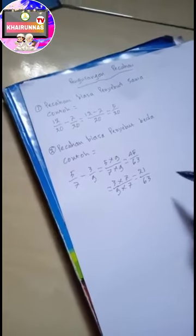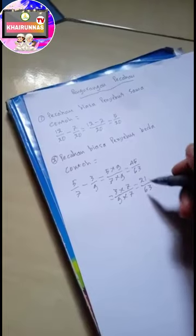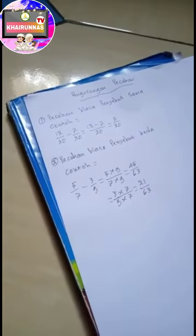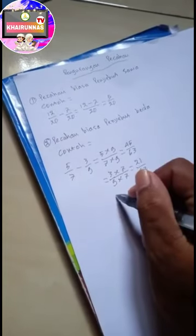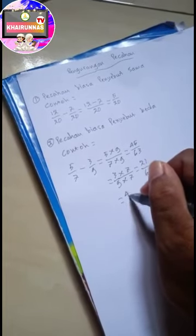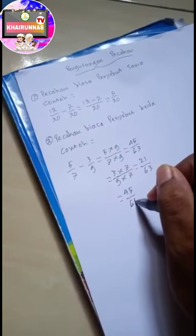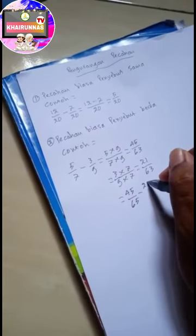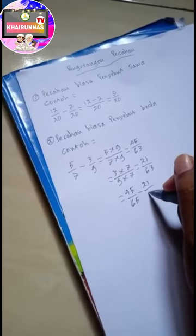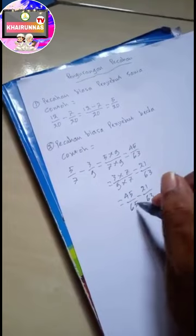Ini sudah dapat ya. Maksudnya penyebutnya sudah sama, 63. Yang ini juga 63. Jadi langsung kita tulis 45 per 63 dikurangi 21 per 63.